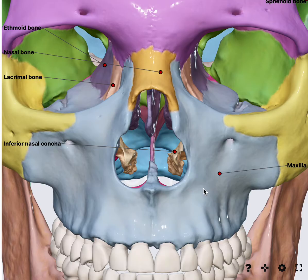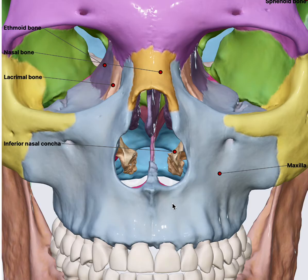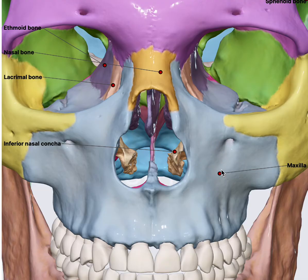Another important clinical and surgical aspect is that we can access this area via an external approach called the Caldwell-Luc procedure. Imagine there is soft tissue on top, and around this area you have the gingivo-buccal sulcus. After making an incision, we go in and take out the thinnest part of the bone to gain access to the maxillary sinus. Many surgeons prefer this approach as it maintains the ostium intact.